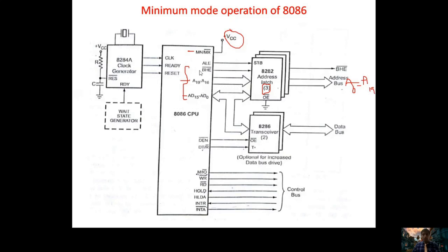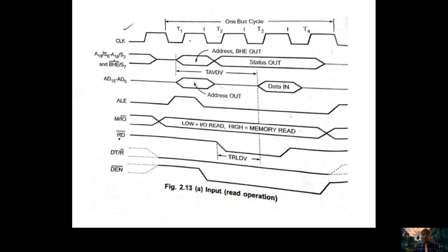In minimum mode, all control signals are generated by the processor only — controlling the latches and transceiver. In our timing diagram we should observe the representation of ALE: when it is high and when it is low, then the multiplexed lines, DE̅N̅, DT/R̅, and control signals like M/IO̅, WR̅, RD̅ — these six main signals and the multiplexed lines are what we mainly consider for drawing the timing diagram.